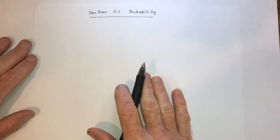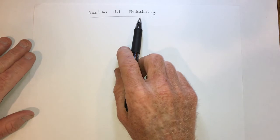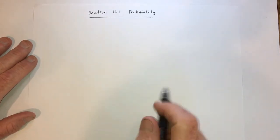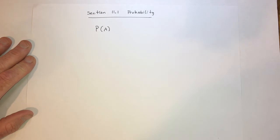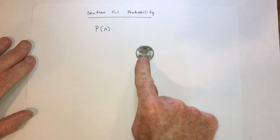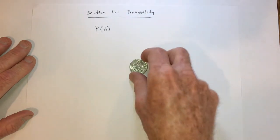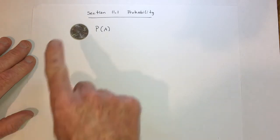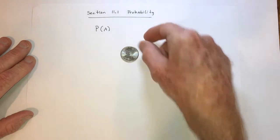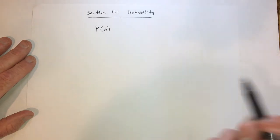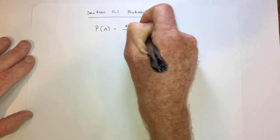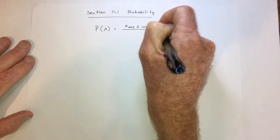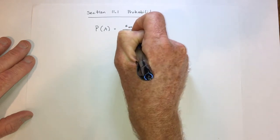In chapter 11 we're going to do two sections on probability. This first section is the introduction to the idea of probability. We write P for probability and then whatever event we're talking about, like event A. The basic definition is the number of ways A can occur over the total number of possibilities.